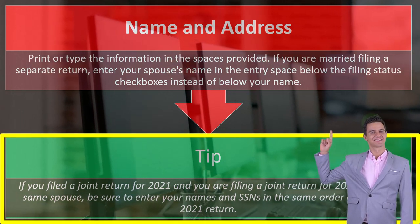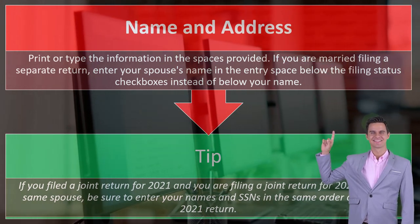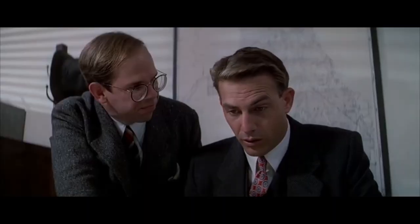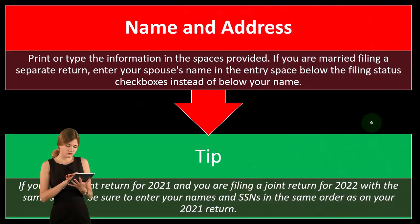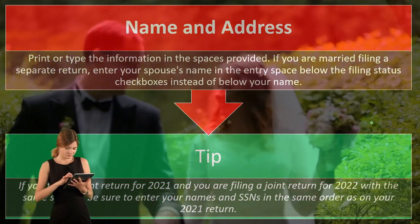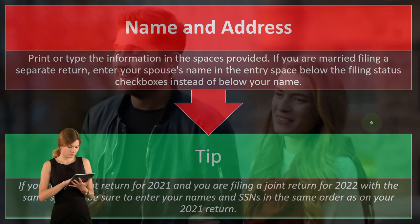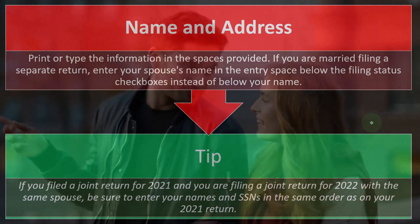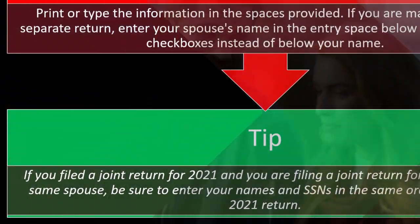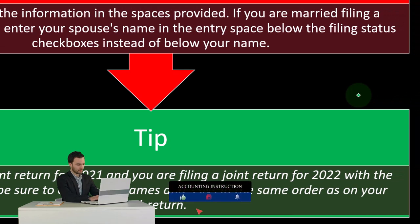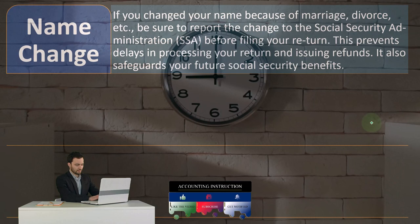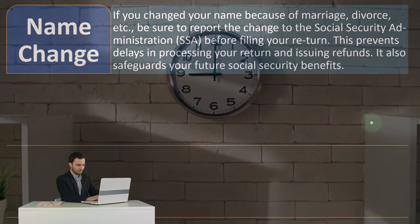Tip: If you filed a joint return for 2021 and you are filing a joint return for 2022 with the same spouse, be sure to enter your names and social security numbers in the same order as your 2021 return. If you're married filing joint, you have the first spouse on the first line and the second spouse on the second line. Flipping the order is not technically wrong, but it could confuse the IRS when their automated system tries to compare one year to another, since it would be comparing the same line to the same line.